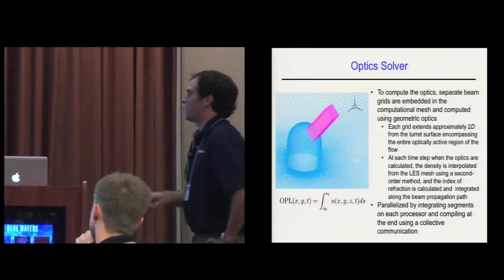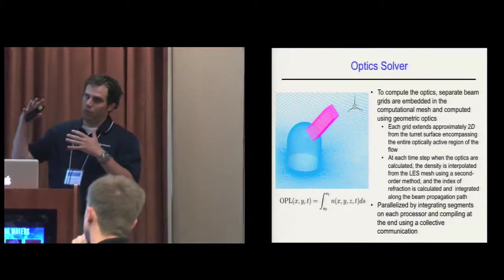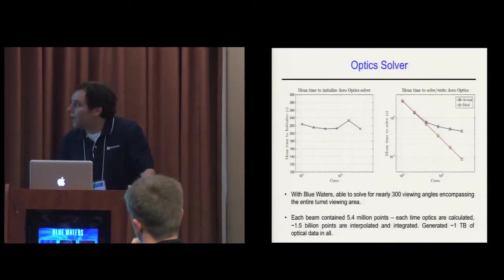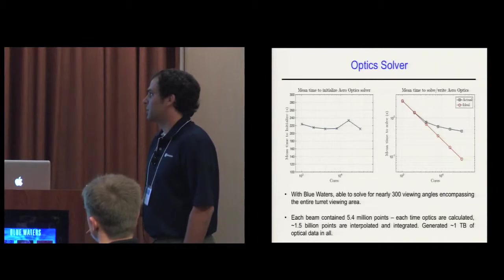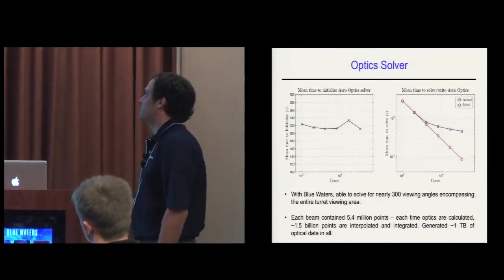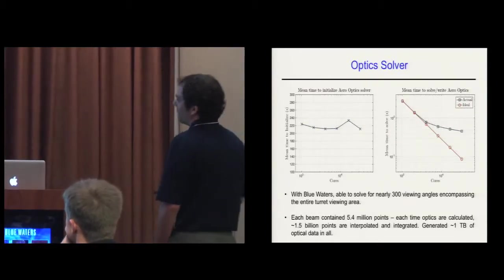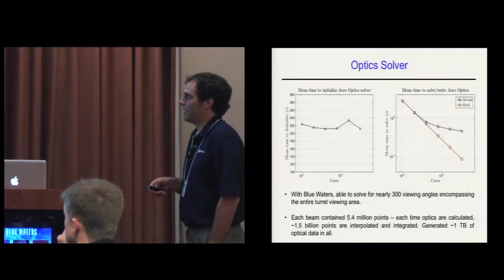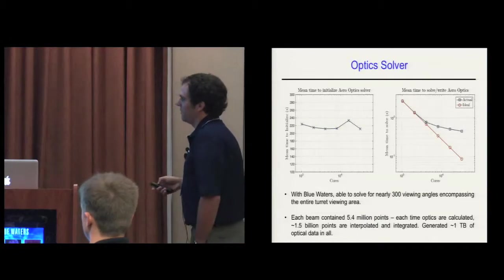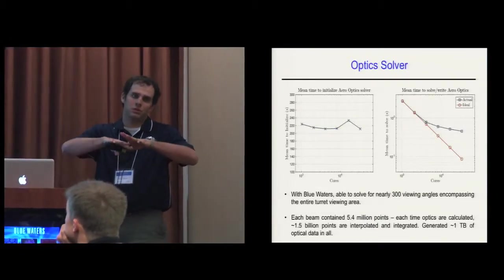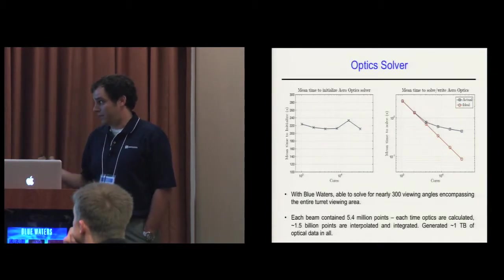At each time step when the optics are calculated, the density gets interpolated from the LES mesh onto the optical beam mesh. Then the index of refraction is calculated and we integrate outwards. I parallelize this by breaking the beams into wherever it's found locally, then bringing it all together with collective communication. The optics solver initialization is pretty insensitive to the number of cores I use, but the optics kind of stalls out around 8,000 cores. I think it's due to using collective communications spanning all the cores instead of just the ones that have beams on them.